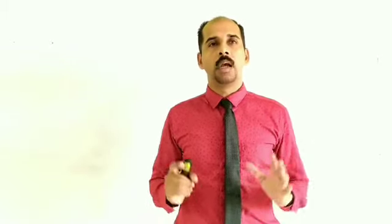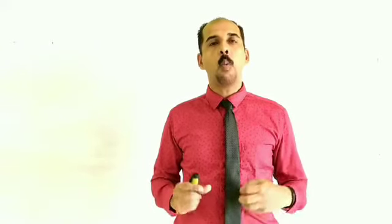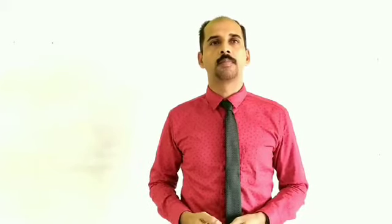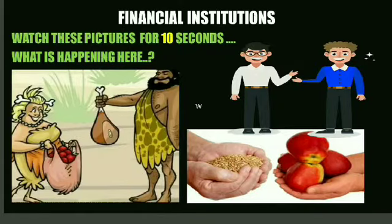First we can see a picture shown here. What are the things shown in this picture? What is happening there? One person is trying to exchange his meat with the vegetables. Another person is exchanging some apples with grain, and the other two are also exchanging something.